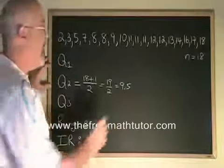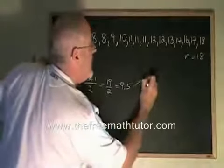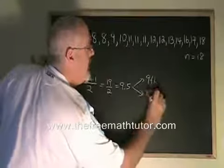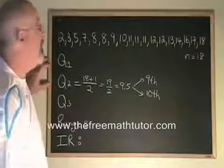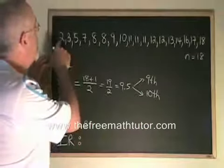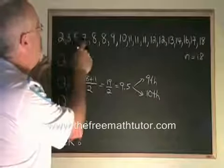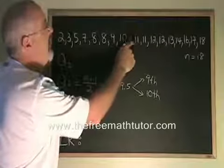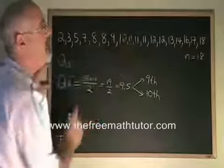9.5 means the 9th and the 10th data values. Let's find them. Counting from here, we have our 1st, 2nd, 3rd, 4th, 5th, 6th, 7th, 8th. Our 9th and 10th data values are these two elevenths.